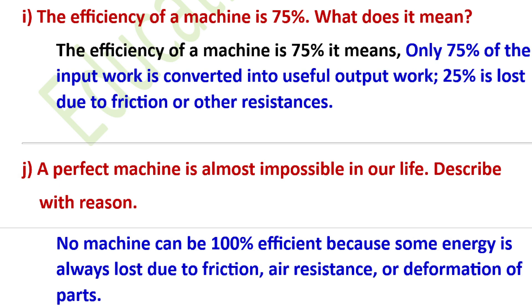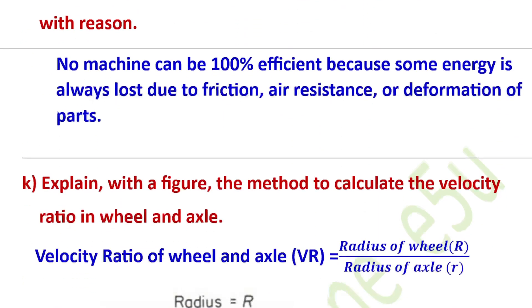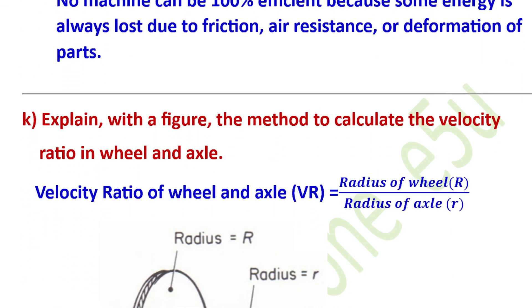Describe with reason: what is a perfect machine and why is it not possible in our life? Some energy is always lost due to friction, resistance, and deformation of parts, so no real machine can be perfect.